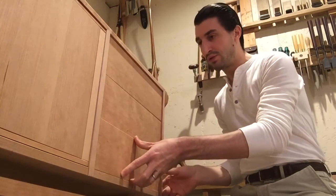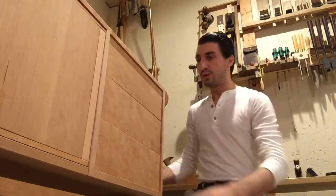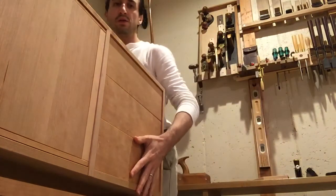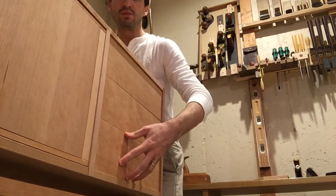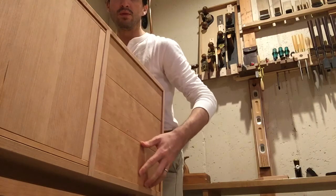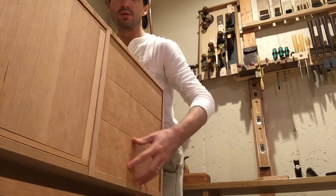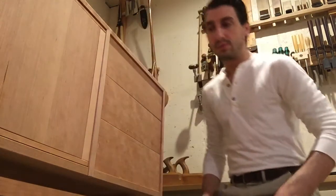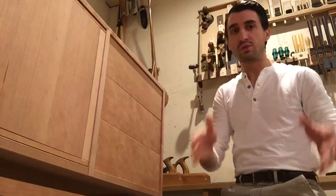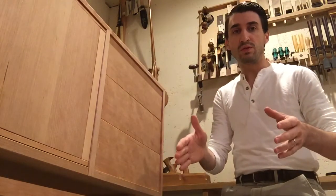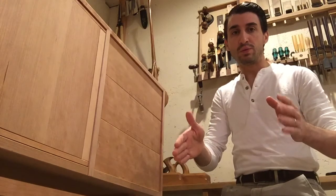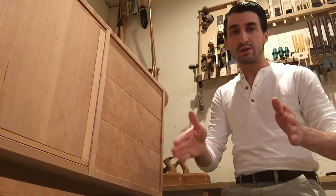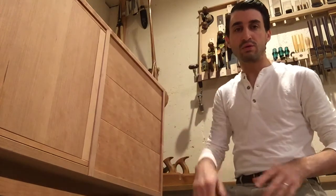This can be applied to these drawer sides and checked for squareness in the assembly. If the case teeter totters at all, which this one does not because it was squared, any sort of teeter totter will cause a distortion in the drawer when it's assembled. So the drawer will be out of whack like this and it won't operate and it requires more clearance.